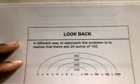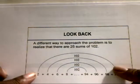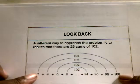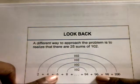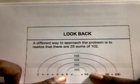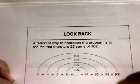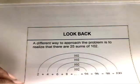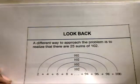Then we look back. Here's a different way to approach the problem: realize that there are 25 sums of 102. As you can see, 2 plus 100 is 102, 4 plus 98 is 102, 6 plus 96 is 102, 8 plus 94 is 102, and this continues all the way to 50 plus 52, which gives 102. So there are 25 sums of 102.